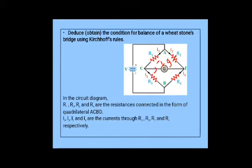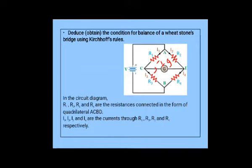First, we have to draw the circuit diagram. In the Wheatstone's bridge, R1, R2, R3, R4 resistors are connected in the form of a quadrilateral — name the quadrilateral as A, B, C, D — and mark the directions of the currents. In between A and B, the battery is connected. In between C and D, a galvanometer of resistance G is connected. The directions of currents I1, I2, I3, I4 are as shown. One more current is considered — the current through the galvanometer, denoted by IG. When drawing the circuit diagram, check whether you have given the direction of current.